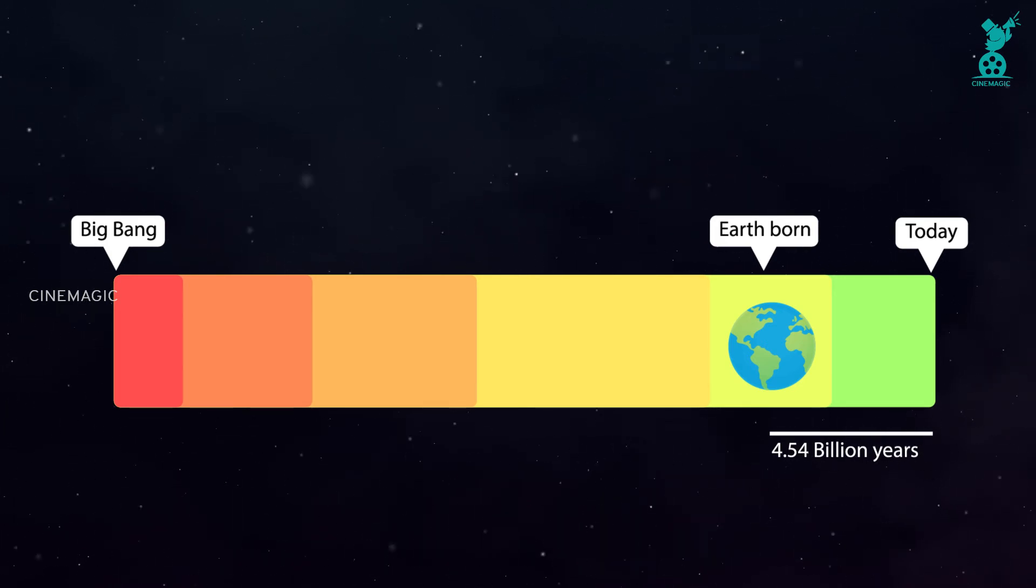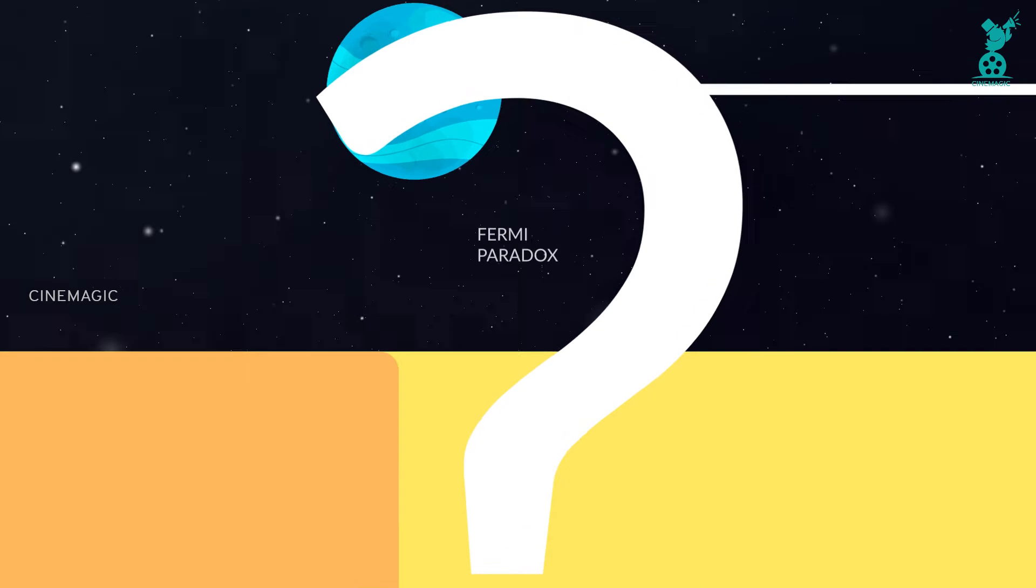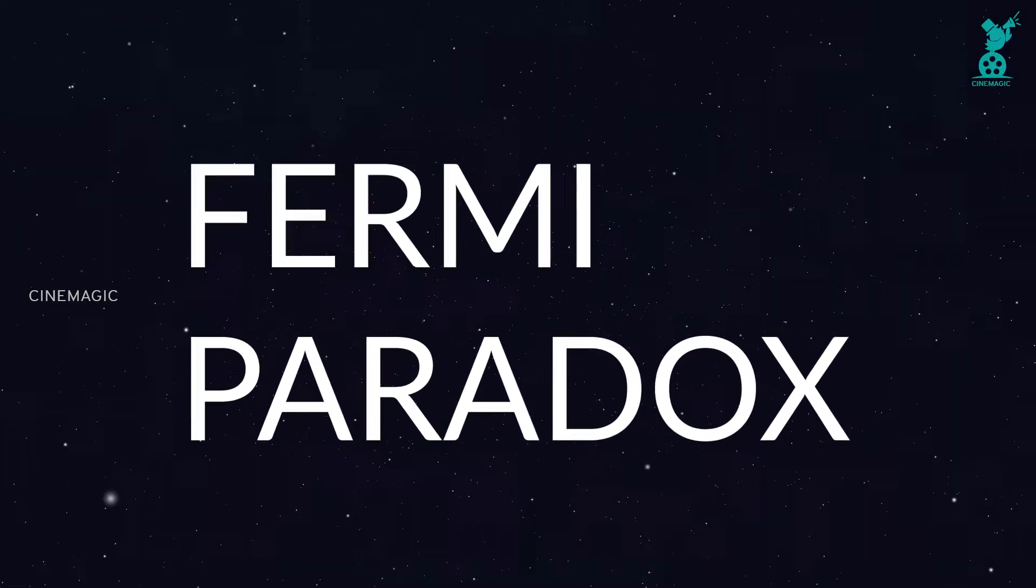So compared to the relatively unborn Earth, where are the aliens that appeared on other planets? Welcome to the Fermi Paradox.